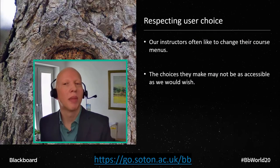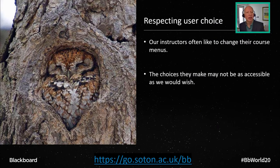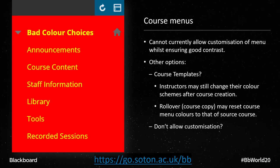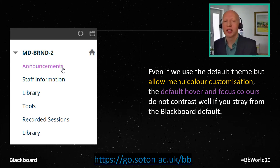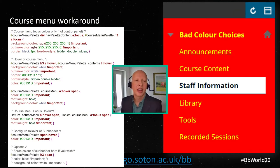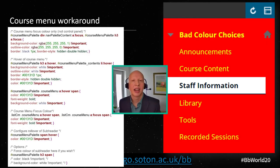What about course menus? We reset all of ours when we introduced the new theme, but we also wanted to allow instructors to still be able to change the colour of their course menus. But what do we do if they end up making something with poor contrast? Even if we do not customize our theme but do allow instructors to change their menu colours, the default hover and focus colours will not necessarily contrast well. For example, purple contrasting with white is below a 2 to 1 contrast ratio. A solution I came up with is a workaround: when hovering or focusing on a menu item in the Blackboard course menu, the background changes to white and the text to black.